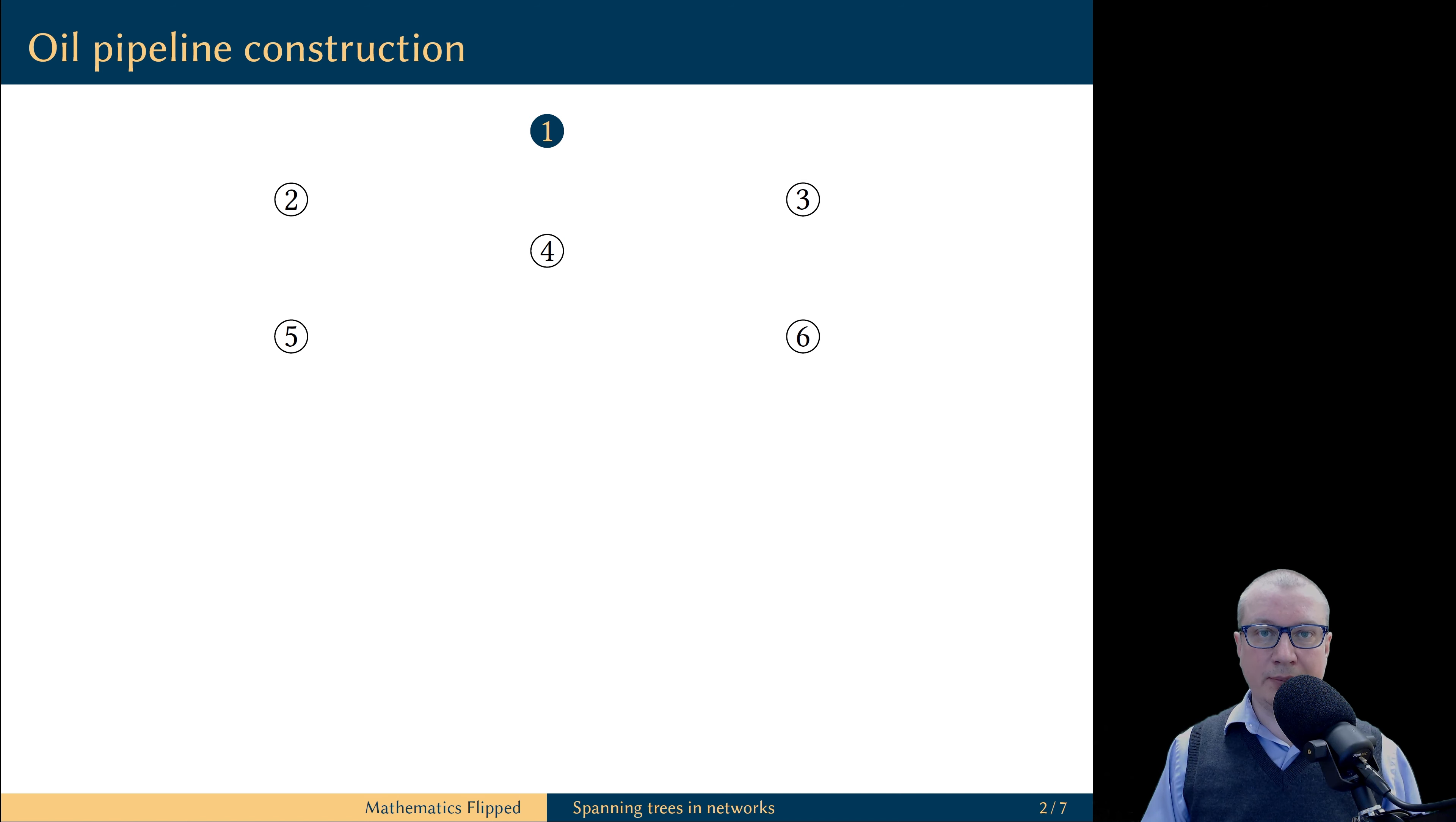Let's consider an oil pipeline construction problem. Suppose we have five oil fields, these sites are labeled as 2 through 6.